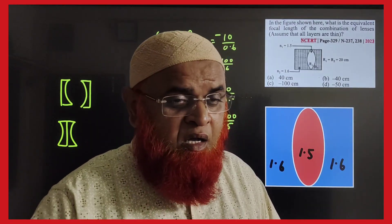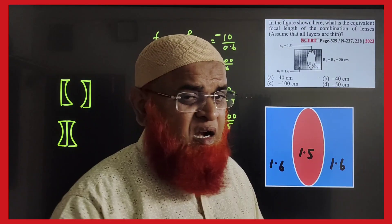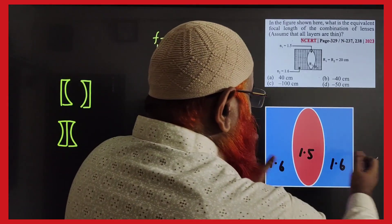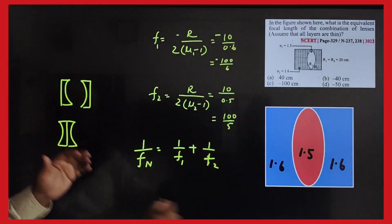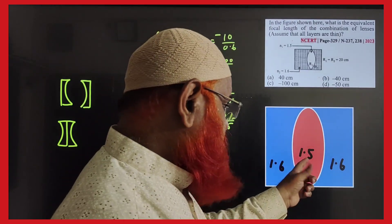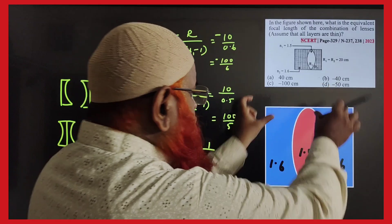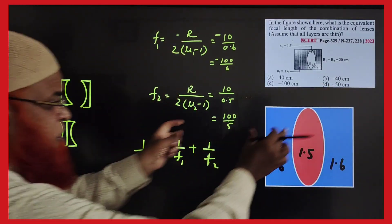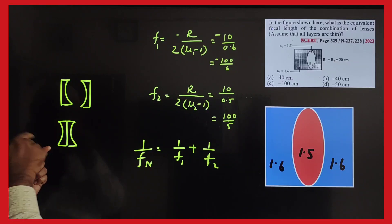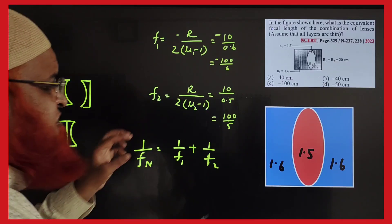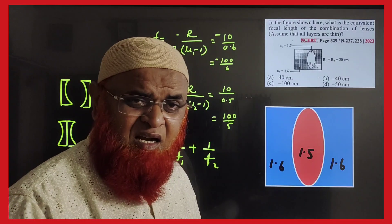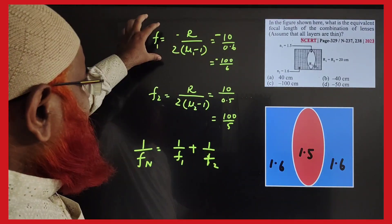I have a wonderful shortcut you cannot find this type of shortcut on the internet — I can challenge you. Two plano-concave lenses have been joined together with one more lens in between. Their refractive indexes are 1.5 and 1.6. These two plano-concave lenses combined become a single concave lens, and the middle lens is a single convex lens.